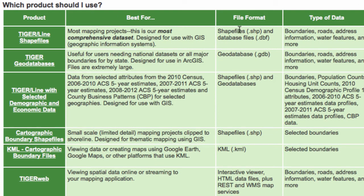If you scroll down here, it gives you a 'which product should I use?' overview for whatever you're looking for. Tiger Line shapefiles are the most comprehensive data set, coming in shapefile format, with attribute information in .dbf format. You've got the geodatabases here — files are extremely large, it notes. Type of data: boundaries, roads, addresses, and so forth. Here is the information about what is available pre-attached to GIS data: boundaries, population counts, housing unit counts — a little bit of data right there.